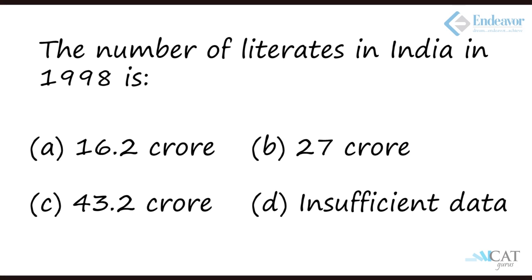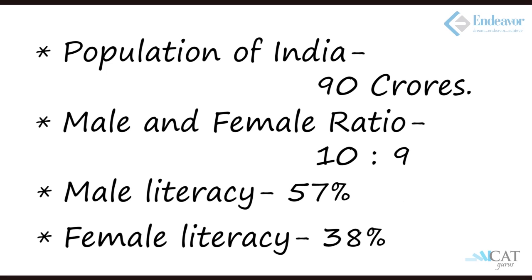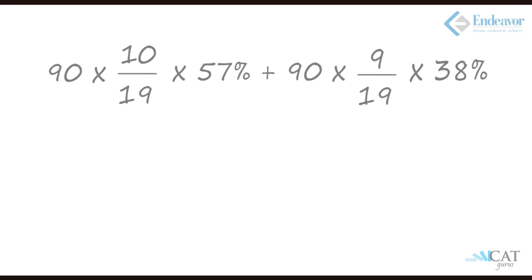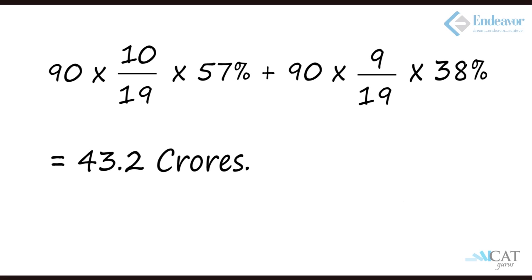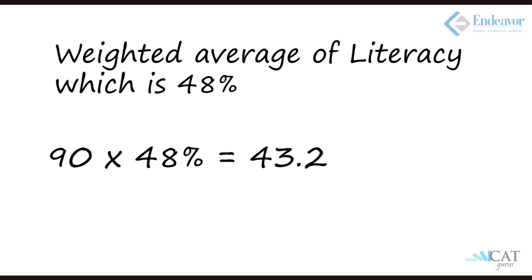Question 6: The number of literates in India in 1998. Population is 90 crores with a male-to-female ratio of 10:9 and literacy rates of 57% (male) and 38% (female). So: (90 × 10/19 × 57%) + (90 × 9/19 × 38%) ≈ 43.2 crores. Alternatively, using weighted average from allegations and mixtures, the weighted average literacy is 48%, and 48% × 90 crores = 43.2 crores. Two methods, same answer.